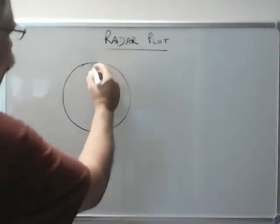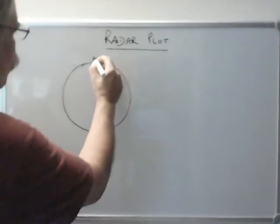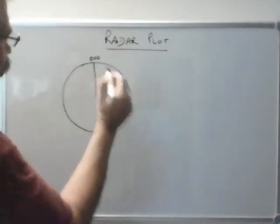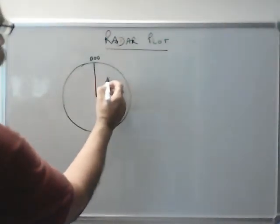For example, a ship. Let's say one ship is going 000 degrees, that is north, and we see a ship here. So radar will give you only two information about this ship.